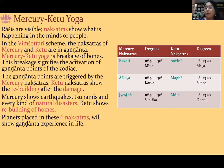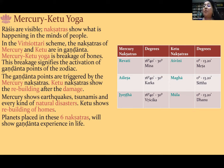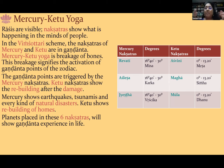The first nakshatras of the adjoining fire rashis are Ashwini in Mesha, Magha in Simha, and Mula in Dhanu — and all three are ruled by Ketu. So the last nakshatras of the water rashis — Revati, Aslesha, and Jyeshtha — are all ruled by Mercury, and the first nakshatras of the fire rashis — Ashwini, Magha, and Mula — are all ruled by Ketu. It's not just a junction between Agni and Jala rashis; there is some kind of clash happening between Mercury and Ketu, and they are playing a very significant role here.